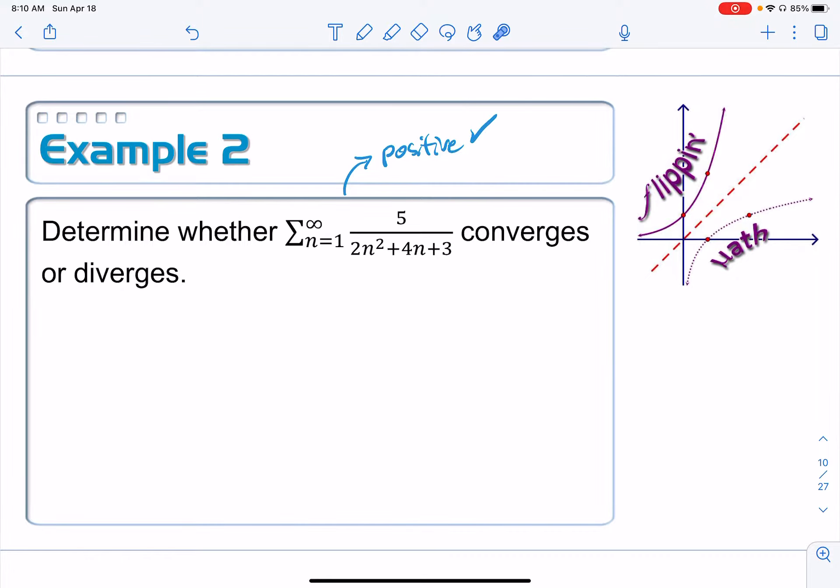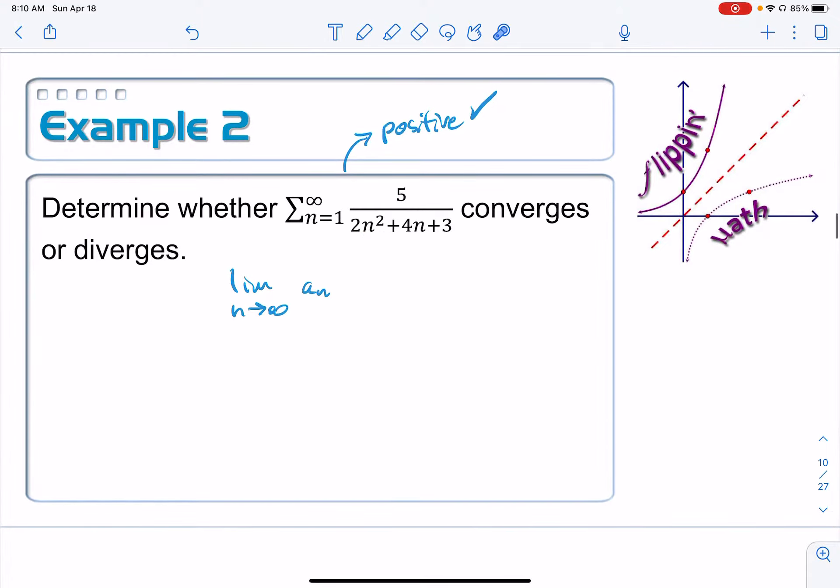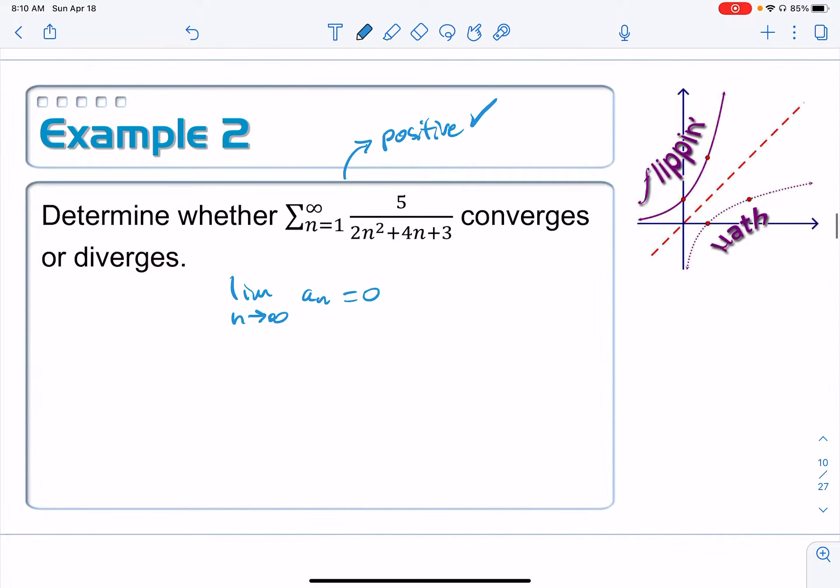How about the nth term? What does it do? If we take the limit as n approaches infinity of a_n, well the top stays at 5 and the bottom just keeps getting bigger and bigger, so this is going to 0. You really don't know anything, but that's always a very quick thing to check because if that test failed, you're pretty much done. And that's a very quick thing to check.